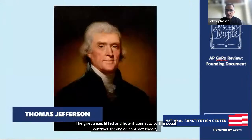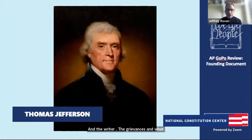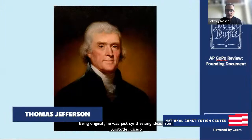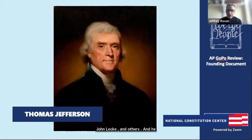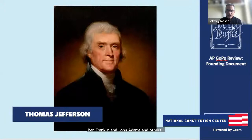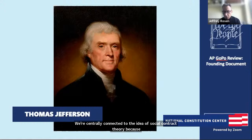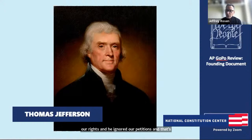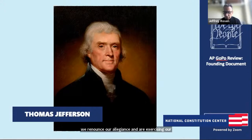The writer was Thomas Jefferson, although he said he wasn't being original — he was synthesizing ideas from Aristotle, Cicero, John Locke, and others. He was on a committee with Ben Franklin, John Adams, and others. His grievances were centrally connected to social contract theory: the king has our allegiance in exchange for protection — we obey him and in exchange he protects our rights. But because he hadn't protected our rights and had ignored our petitions, we renounce our allegiance and exercise our original natural right to alter and abolish government.